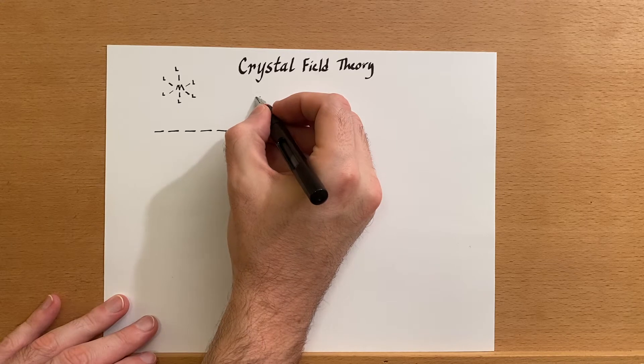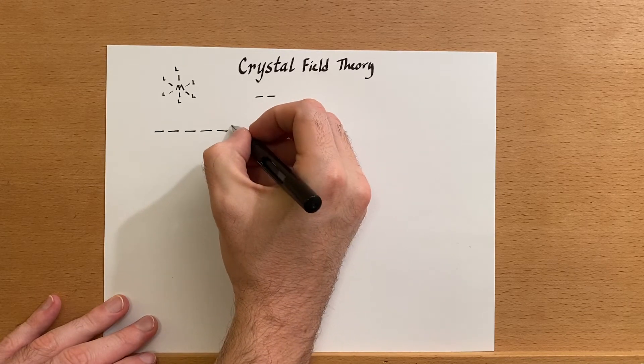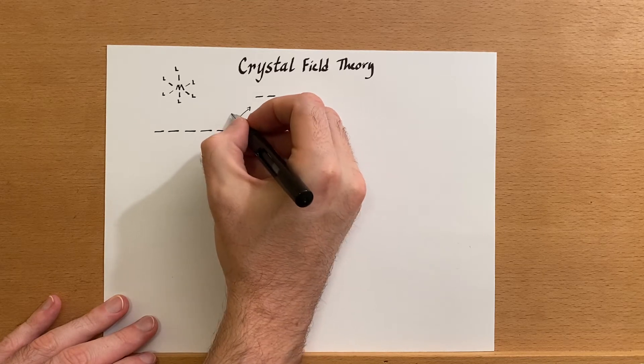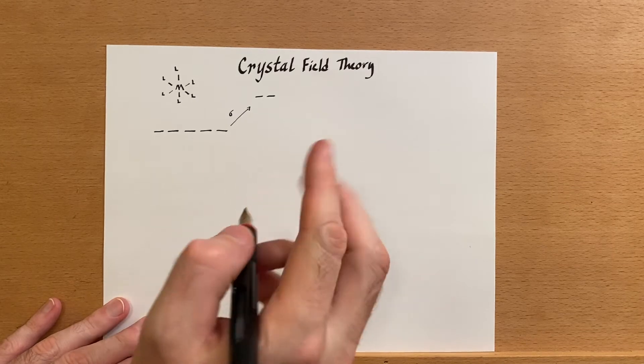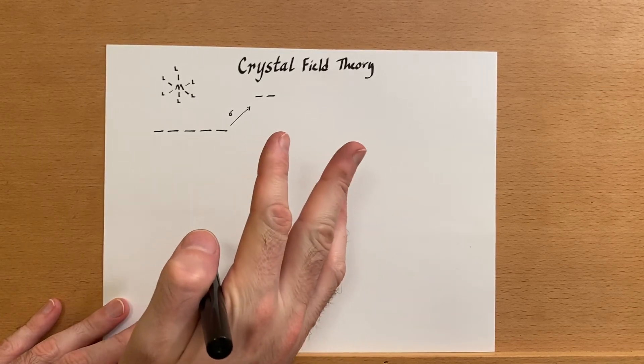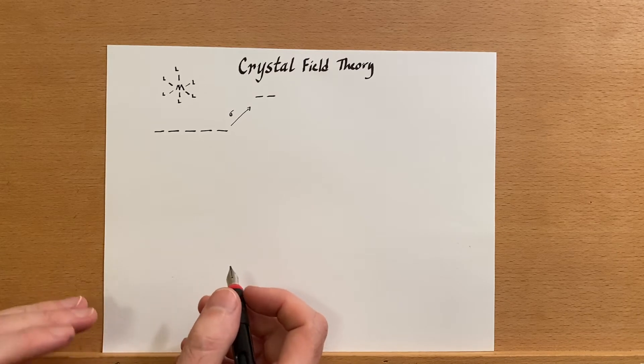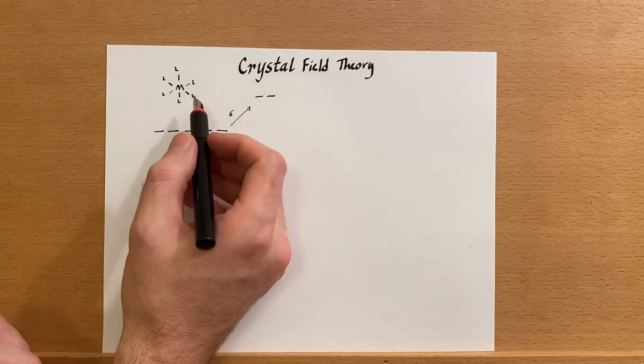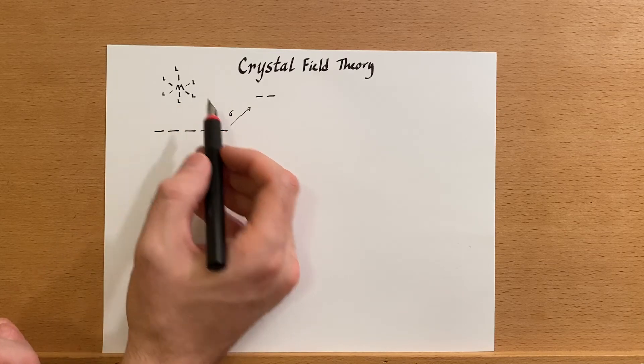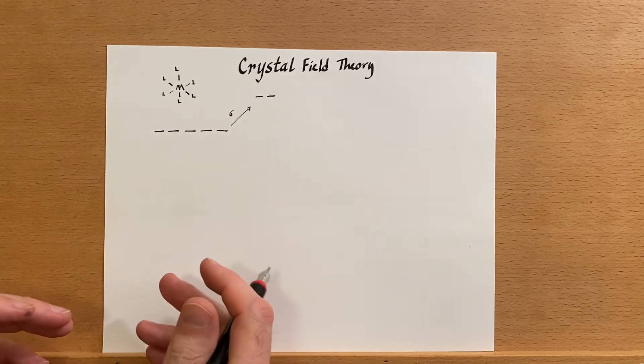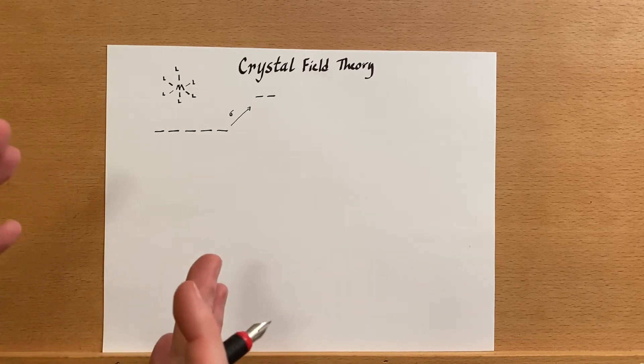Two of these orbitals are going to get pushed up a little higher in energy because of sigma donation. Three of these orbitals can be stabilized by pi interactions with the ligands because the pi interactions will be in those spaces where the other orbitals are.